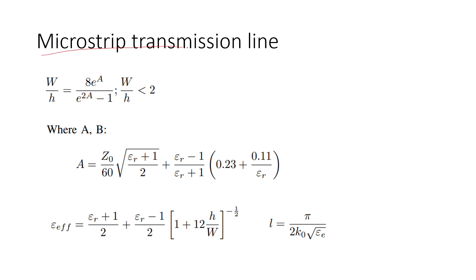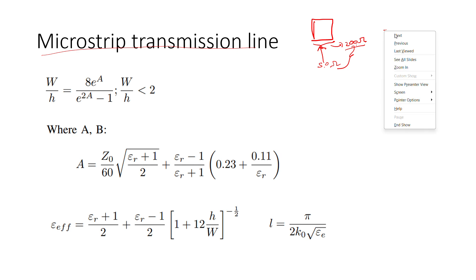Next we move to the calculation of the microstrip transmission line. We need it because the impedance at the rectangular patch edge is around 200 ohms, but any power supply input requires 50 ohms. With a 50-ohm input driving a 200-ohm impedance, there will be a power loss due to impedance mismatch and no useful output. To eliminate this, we use a special microstrip line whose length equals one-fourth of the wavelength — the quarter-wave transmission line.